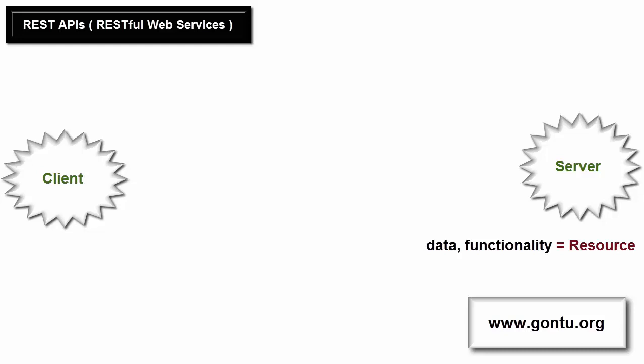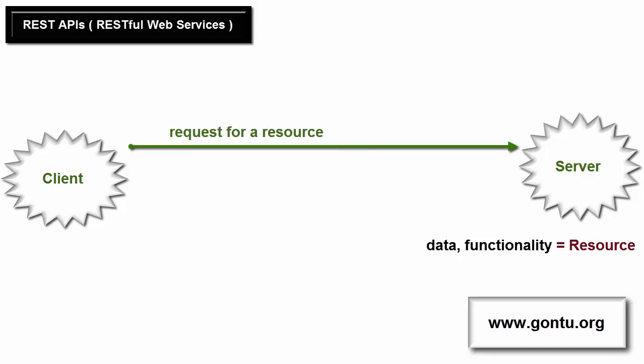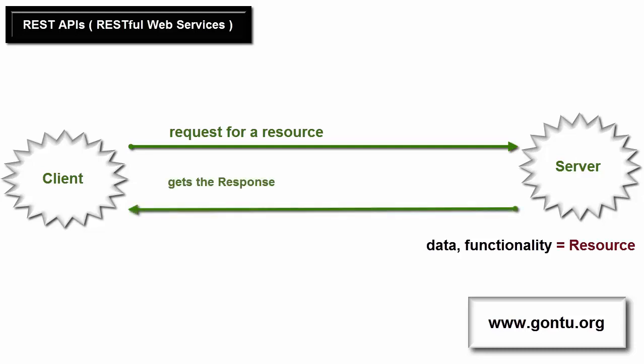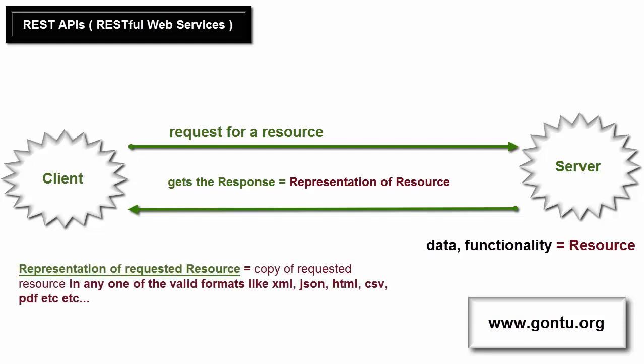A client can access or modify any of the resources present at the server application using its URI. The client sends a request to the server to access a resource using its URI as provided by the server, and the server sends a response back to the client. The response which the client receives is actually the representation of the requested resource — a copy of it in any specific format like XML, JSON, HTML, CSV, PDF, etc., as requested by the client.